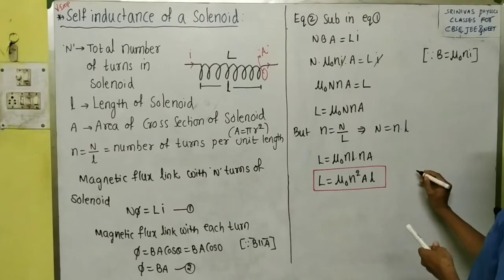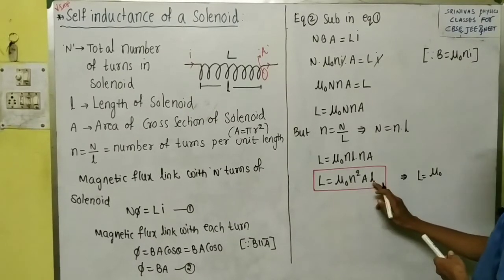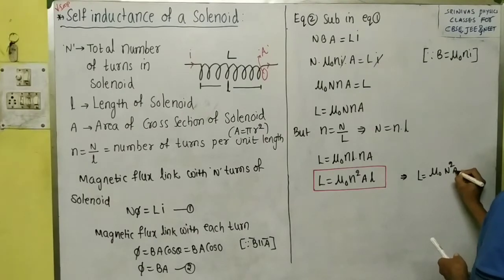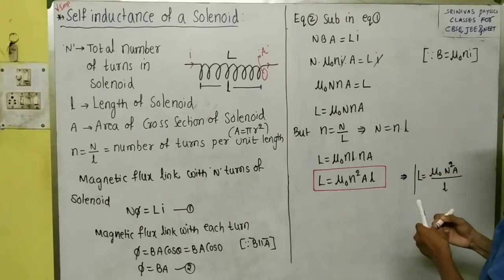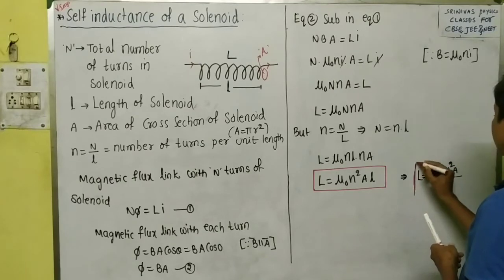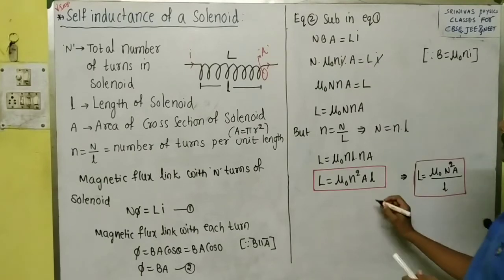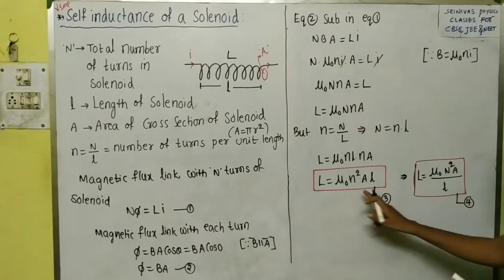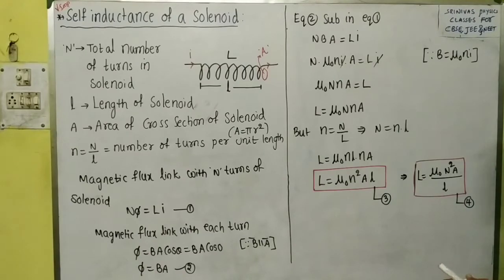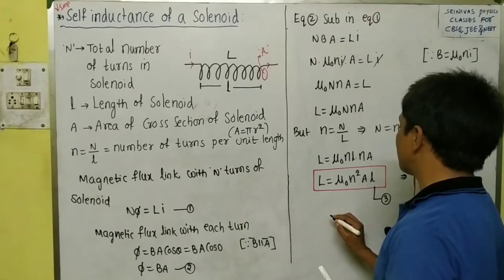We can also write the formula by substituting small n = N/l: L = μ₀·N²/l·A, since the two l's partially cancel. Be careful not to confuse the two l's — small l indicates the length of the solenoid, and capital L indicates the self-inductance.